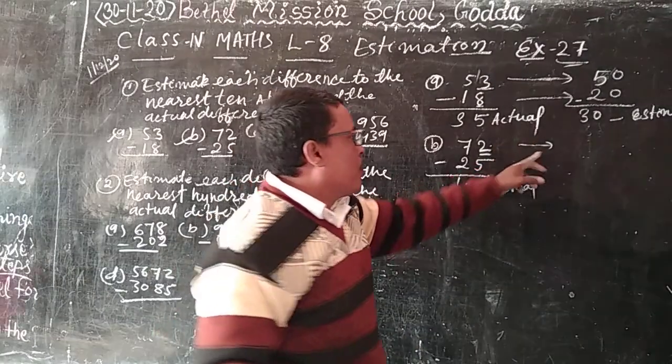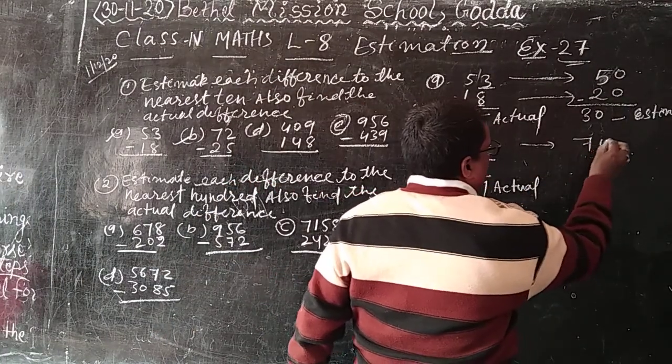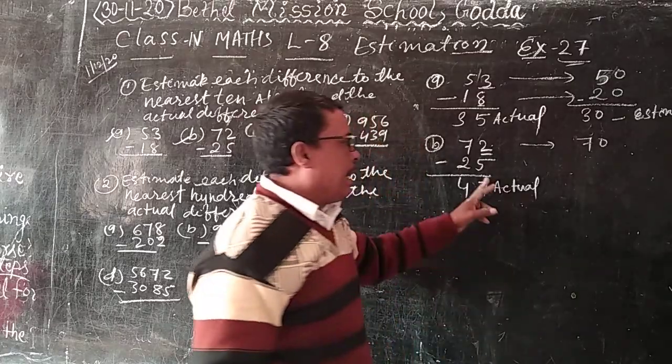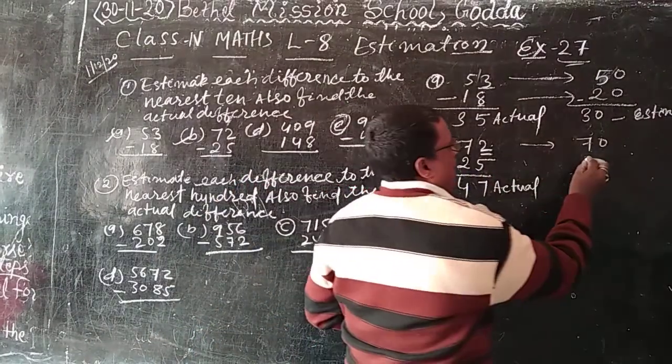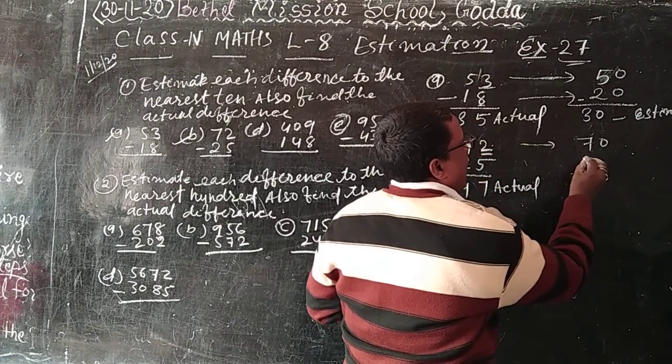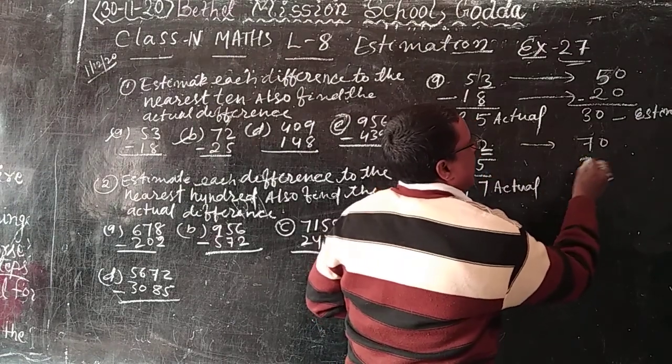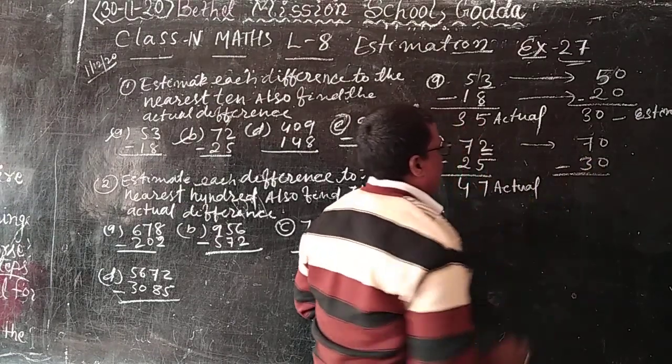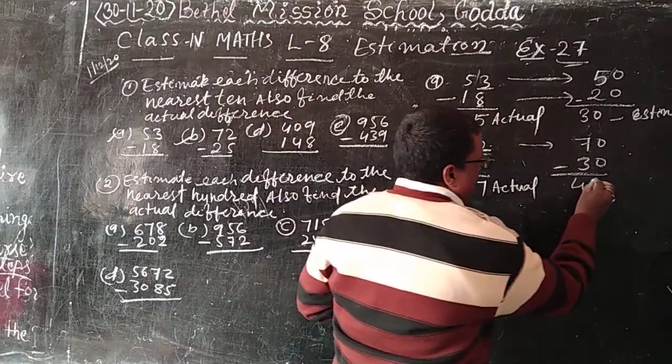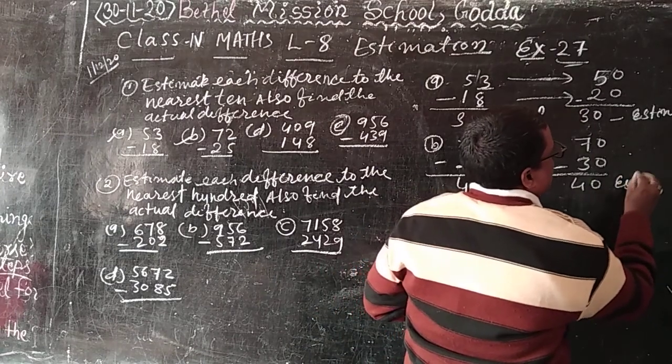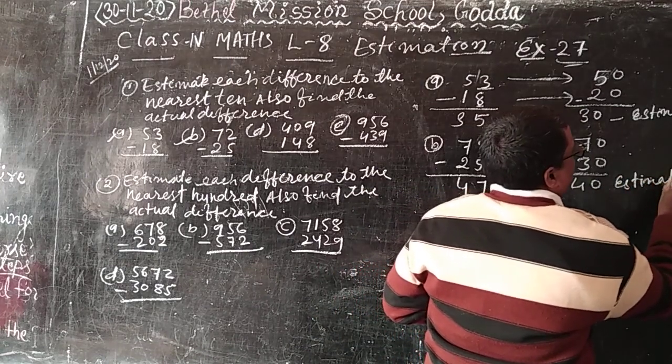So how much write? 70. And here 5 equal to 5. So how much? Plus 1, because nearest 10. 1 plus, 30. 70 minus 30, how much? 40 is estimate.